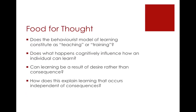Some food for thought for our discussion pages: Does the behaviorist model of learning constitute teaching or training? Does what happens cognitively influence how an individual can learn? Can learning be a result of desire rather than consequence, and how does this explain learning that occurs independent of consequences? This is a quick introductory video — not a comprehensive overview — meant to provide a basic understanding of behaviorism's key features. We will be discussing the strengths and weaknesses as well as comparing and contrasting with other learning theories. Please email if you have any questions, and we will be chatting through the discussion boards.